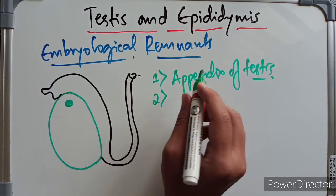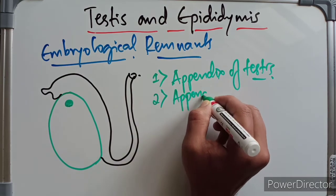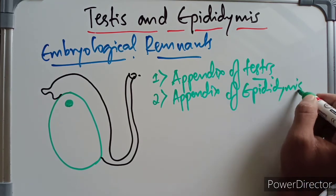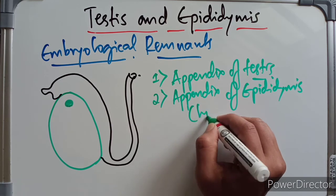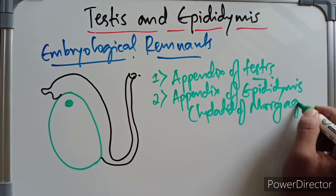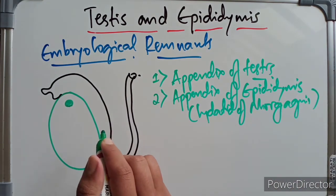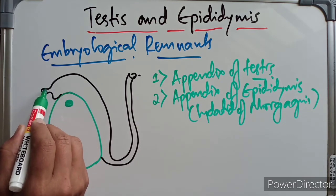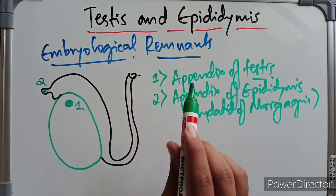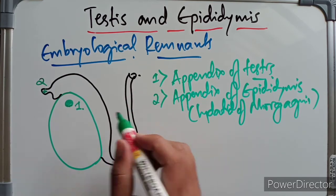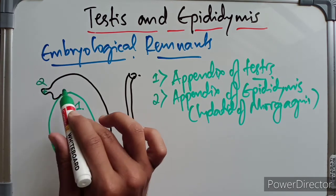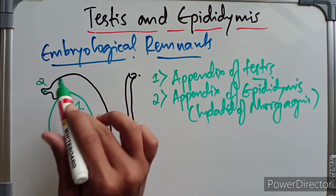The second remnant is the appendix of epididymis, also called the hydatid of Morgagni. It is a small pedunculated rounded body attached to the head of the epididymis, and is the remnant of the cranial end of the mesonephric duct.